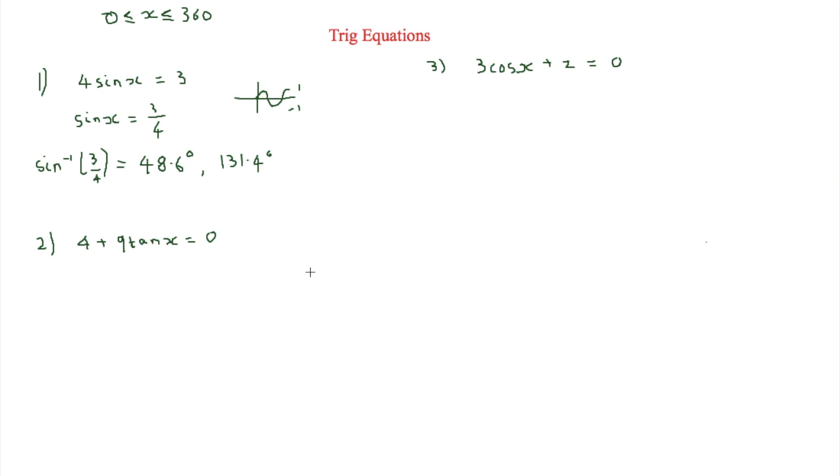So the next one is using tan. And again, we're going to do some rearranging. We can find out that we're going to minus the 4 of both sides. And we're also going to divide everything by 9. This means you're going to get tanx is equal to minus 4 over 9.